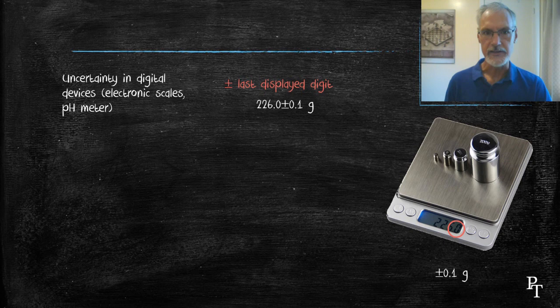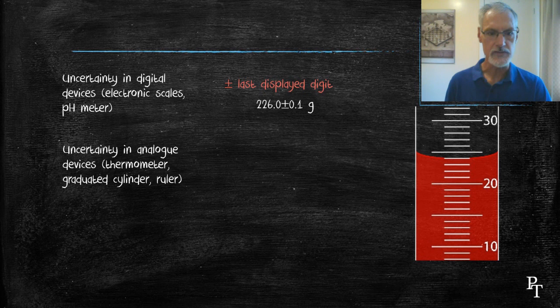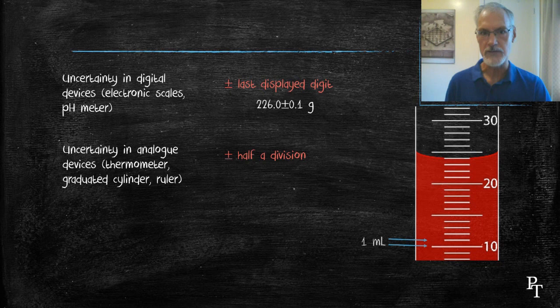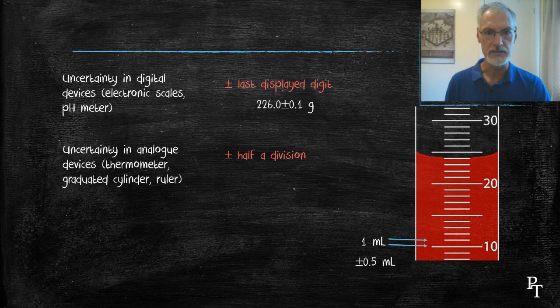The uncertainty of an analog device, a device that has scales on it, is usually given as plus or minus half a division. So in this particular case, I look at my device, and in this case, each line represents one milliliter. Dividing that one milliliter by a half, I get 0.5 milliliters.